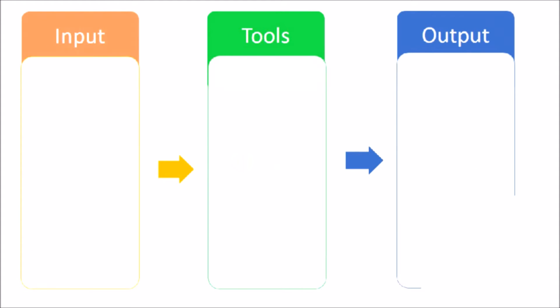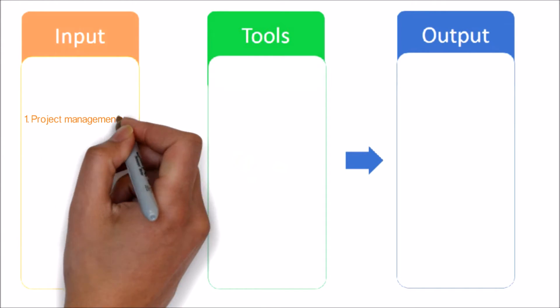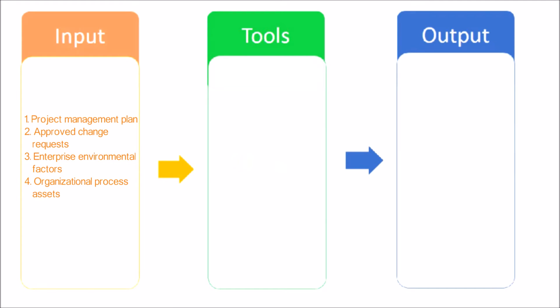Let's see the inputs, tools and techniques, and outputs of the direct and manage project work process. Here are the inputs. Project management plan — the project management plan contains subsidiary plans concerning all aspects of the project. Approved change requests are an output of the perform integrated change control process and include those requests reviewed and approved for implementation by the change control board. Enterprise environmental factors. Organizational process assets.